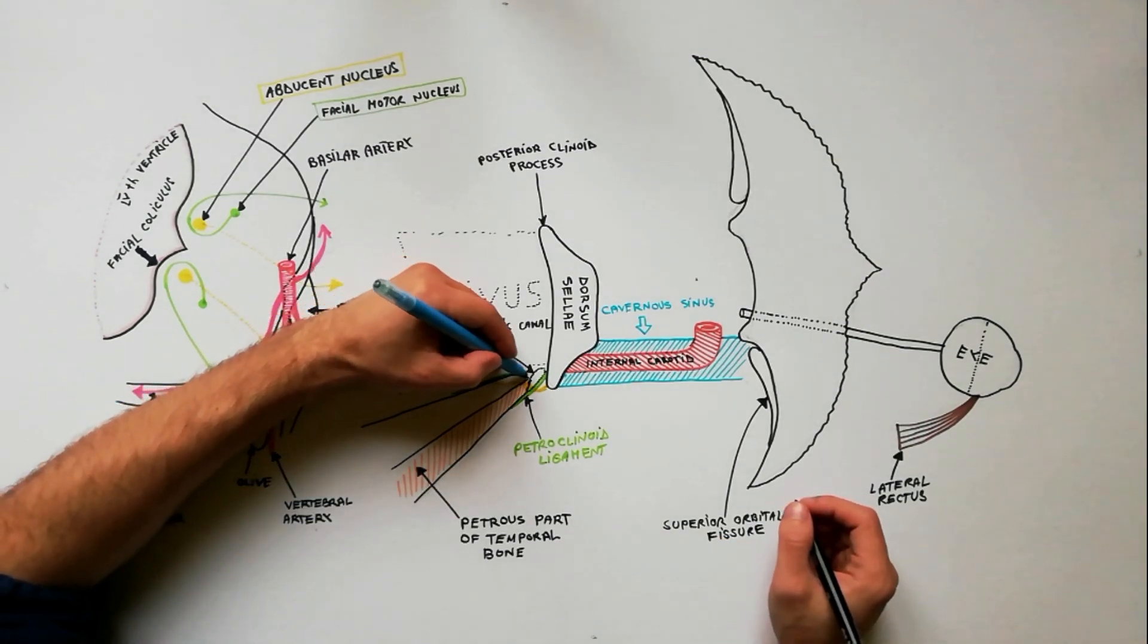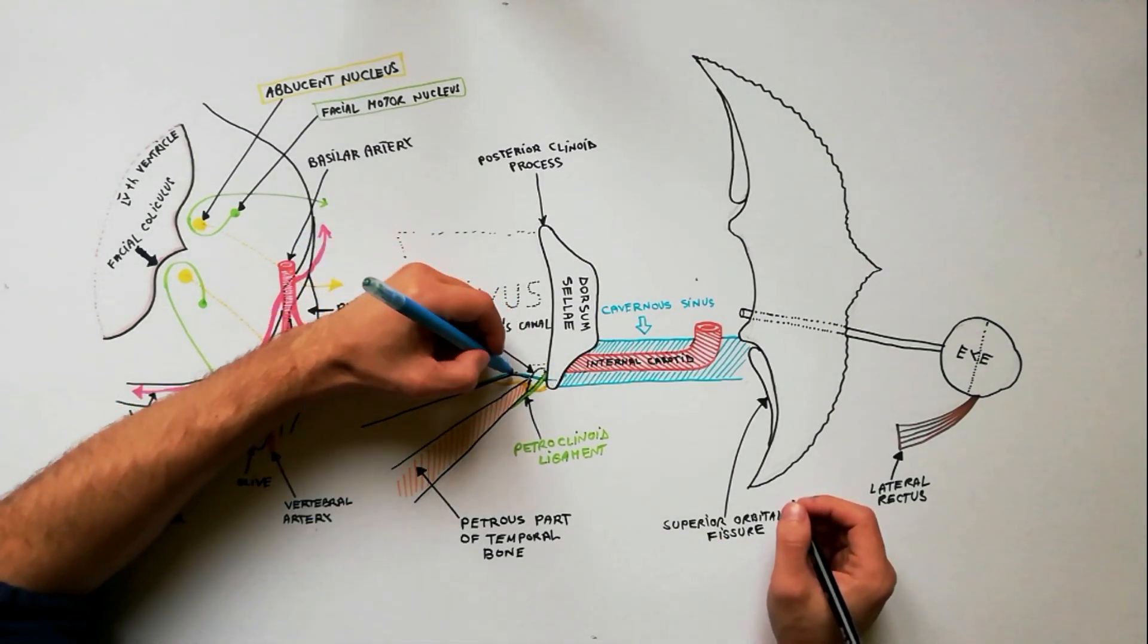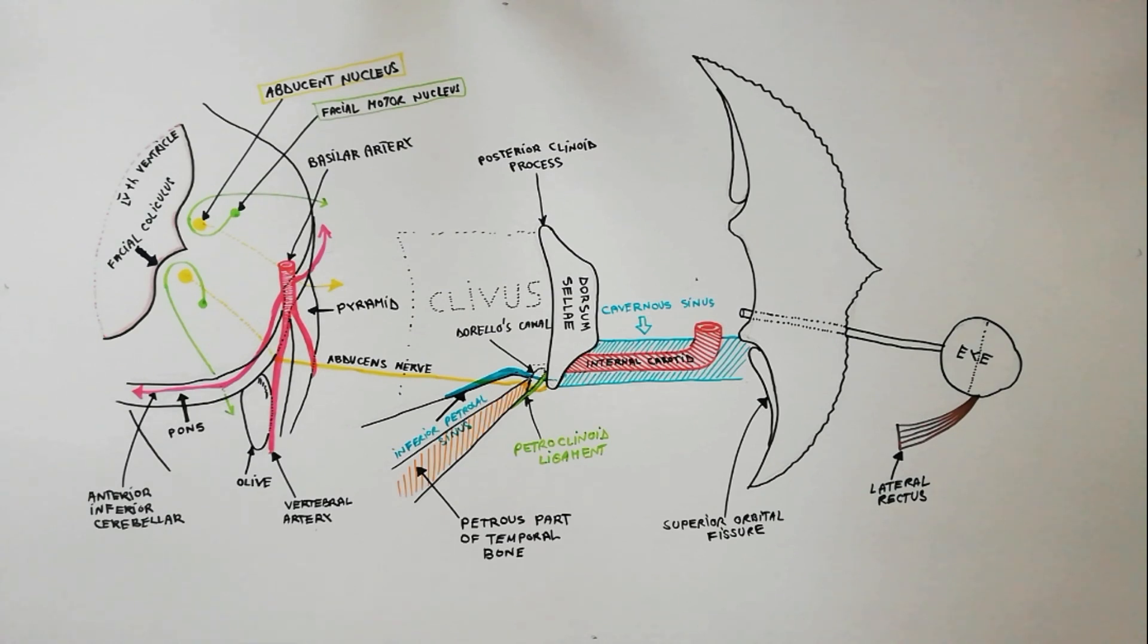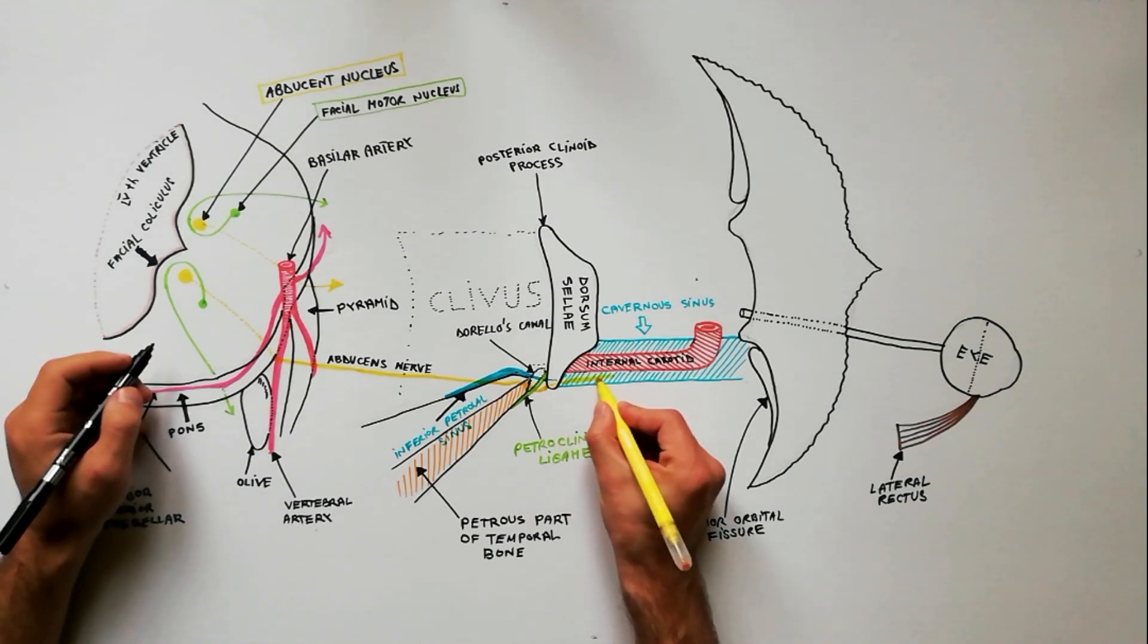In Dorello's canal, the abducens nerve is accompanied by the inferior petrosal sinus, which feeds into the cavernous sinus. The nerve then enters the cavernous sinus.